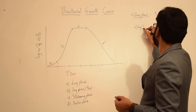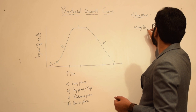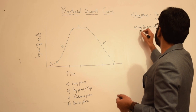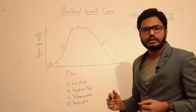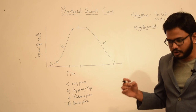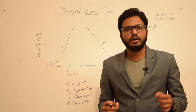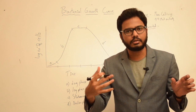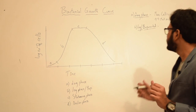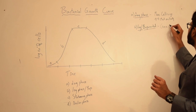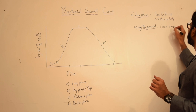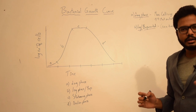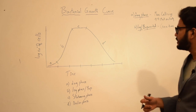Log phase is also called exponential phase. The reason we call it exponential phase is there is exponential growth in the number of cells. We have something called generation time — a particular unit of time where the number of bacterial cells doubles. This generation time is observed in exponential phase, where in one particular unit time there will be a doubling in the number of bacterial cells.